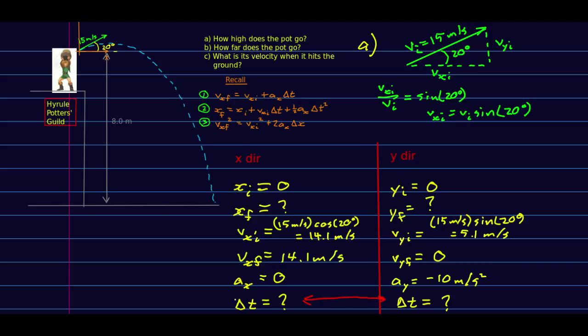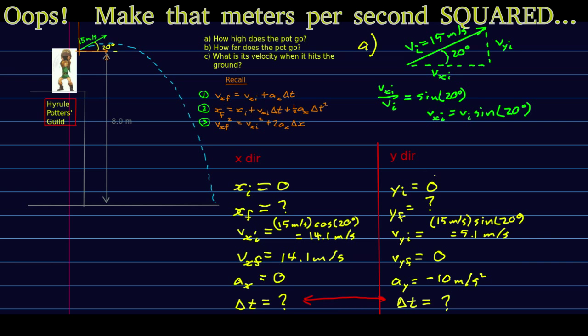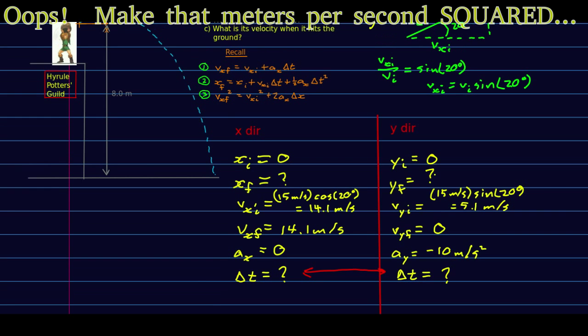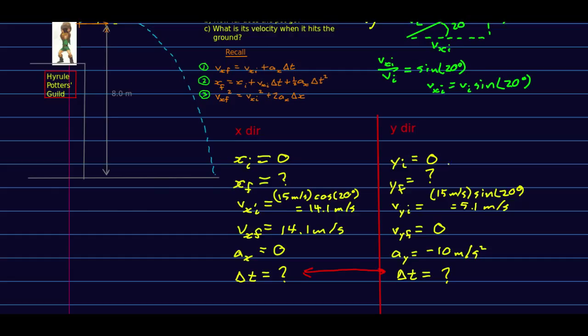I'll just mention that delta t is the thing that connects the two components, so I've drawn a little arrow here to indicate that. Also, I'm going to use 10 for g, and I've set up as positive for y, so my a_y is negative 10 meters per second squared.